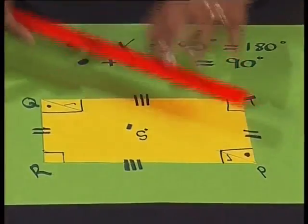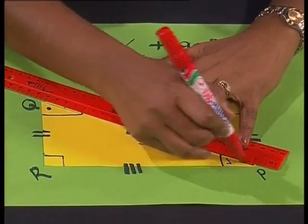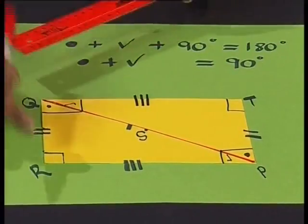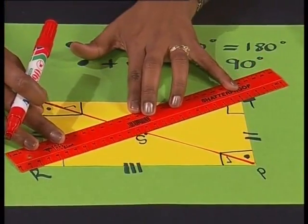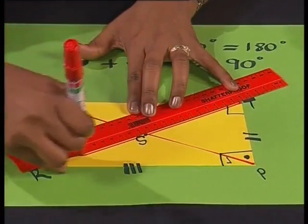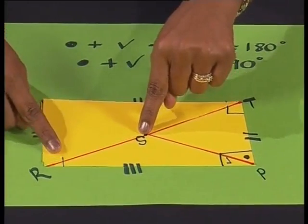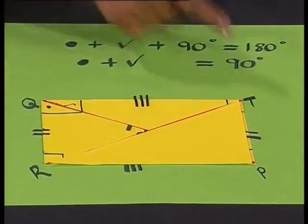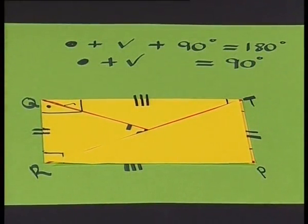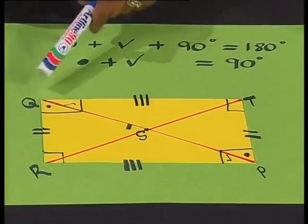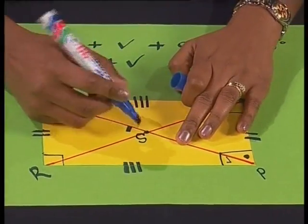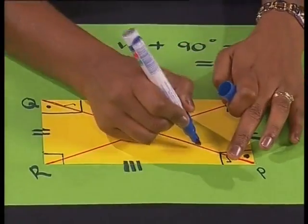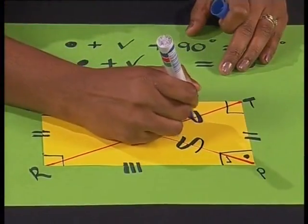Let's now have a look at the diagonals. Our first diagonal is drawn from P to Q, and our second diagonal is drawn from R to T. I can show that these two diagonals are equal to one another. If I take the cut-out of the triangle and rotate it around point S, we see that the diagonals are equal and S is the midpoint of both diagonals. So we can say that in this rectangle, PQ bisects RT, meaning each diagonal is cut into two equal halves.